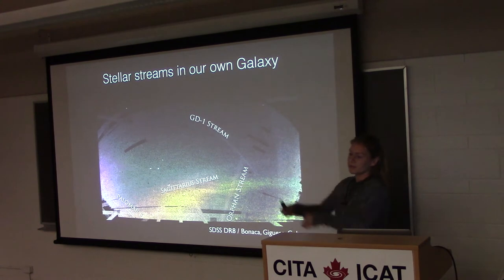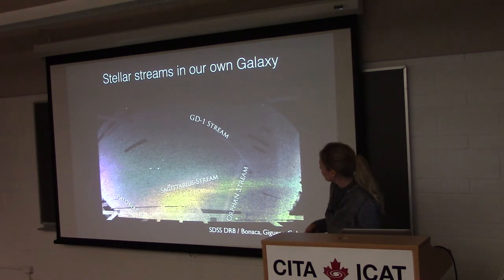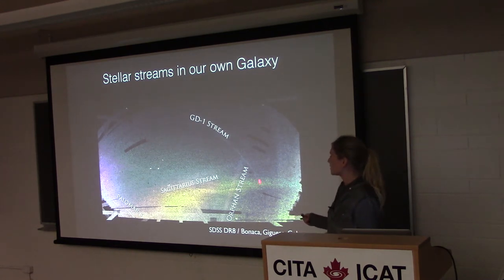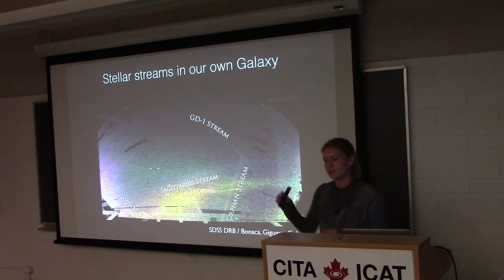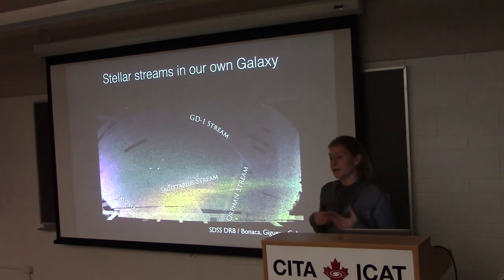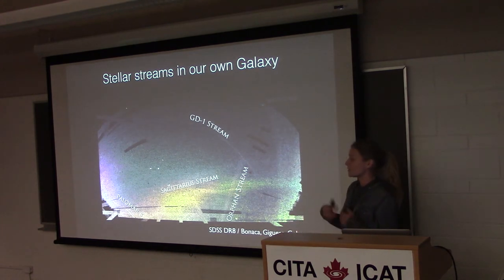The strength of studying streams in our own galaxy is that we can actually get kinematic information. That's very hard to do when we look too far away. But in our own galaxy, we can actually get observations of how the stars in the streams are moving, how the cluster is moving, and that helps us constrain the phase space that we can model these streams and ask about the underlying potential.